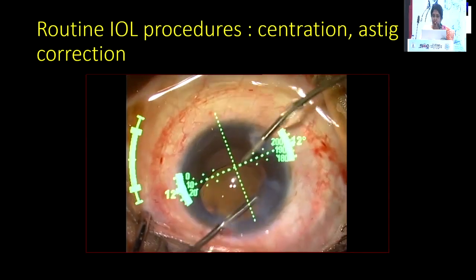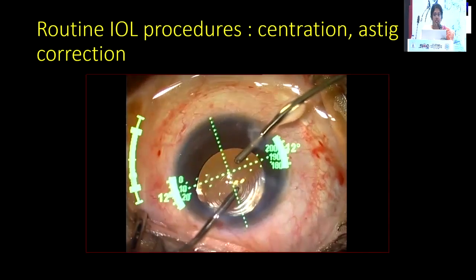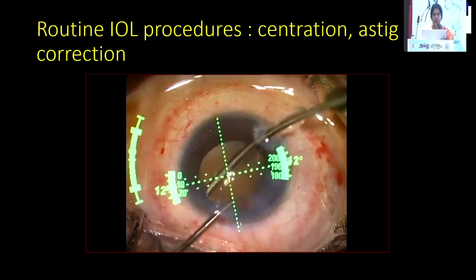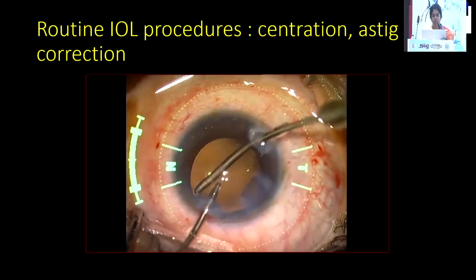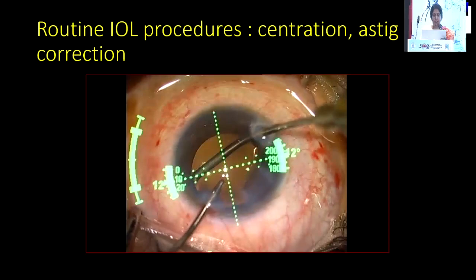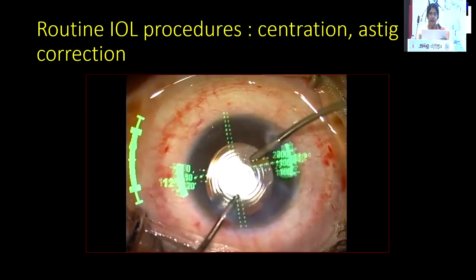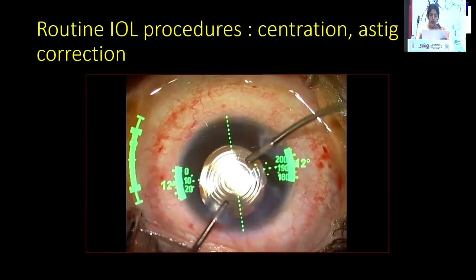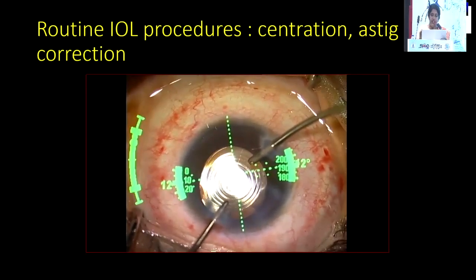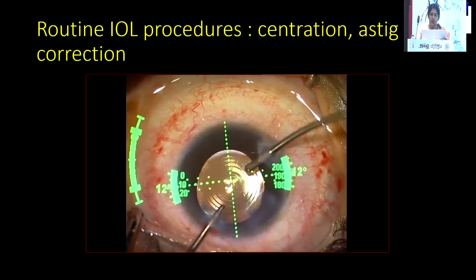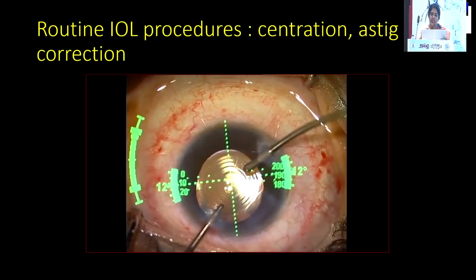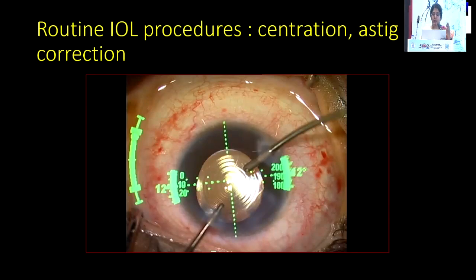If you're considering the concept of a routine IOL procedure, the two most important things are proper centration and astigmatism correction. For proper centration of the IOL, a proper capsule or axis should be there. You can see that the center of the lens and the center of the cornea coincide, with the corneal reflex and the two Purkinje images — from the corneal center and from the IOL center — at the center.